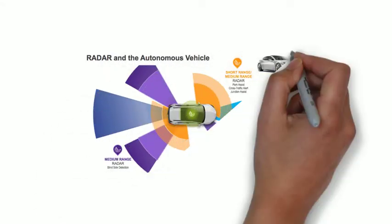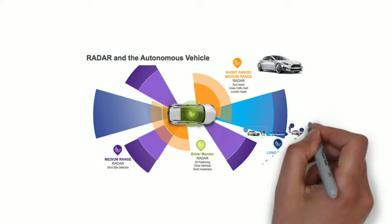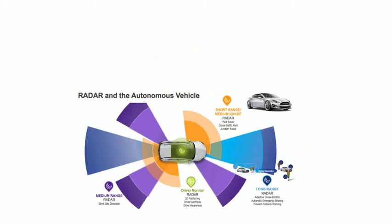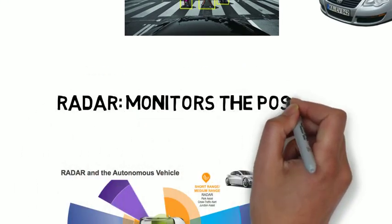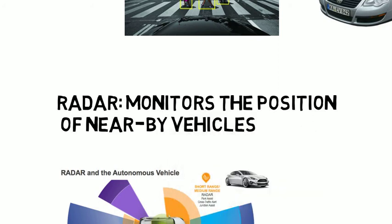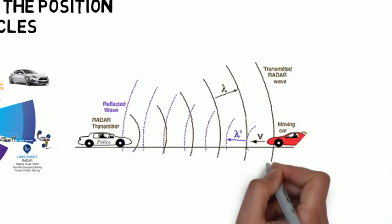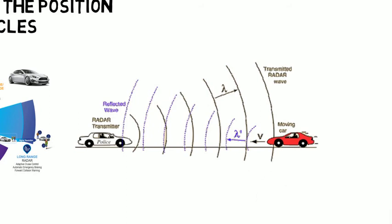Next is the radar sensor. As you know, radar stands for radio detection and ranging. These radar sensors are placed both at the front and back side of the car. They monitor the position of all other vehicles nearby. They use electromagnetic waves in certain bands to reflect off an object and determine its speed and distance.